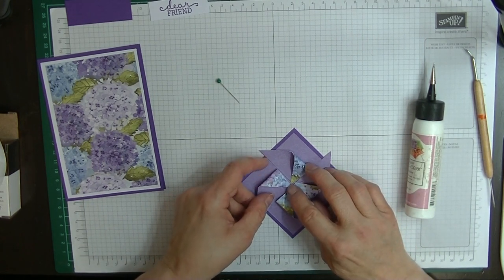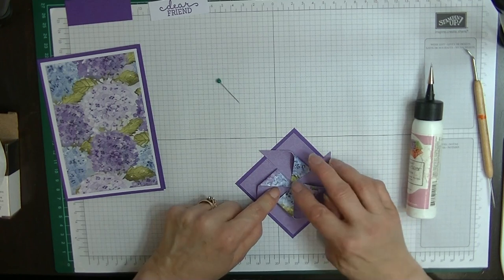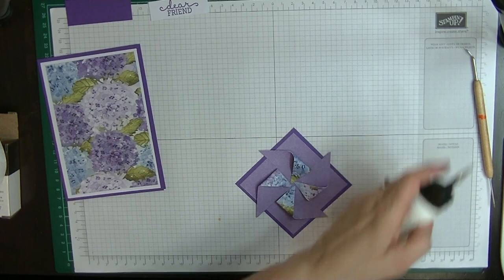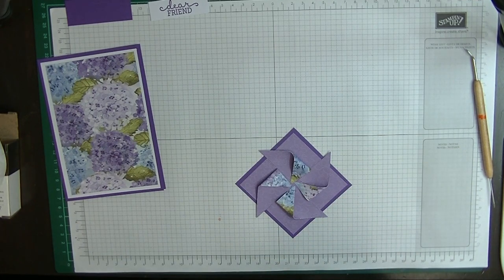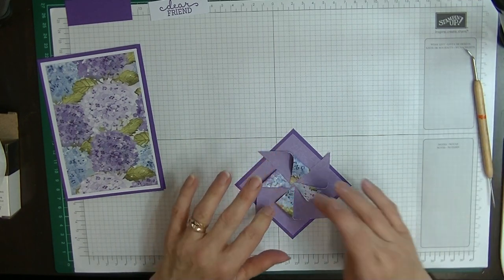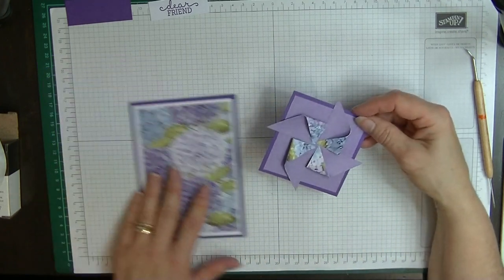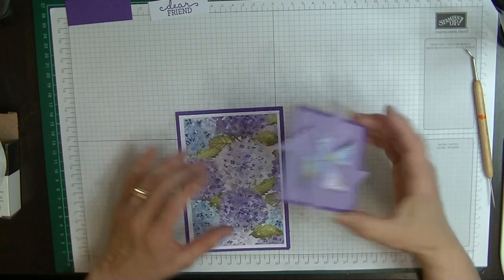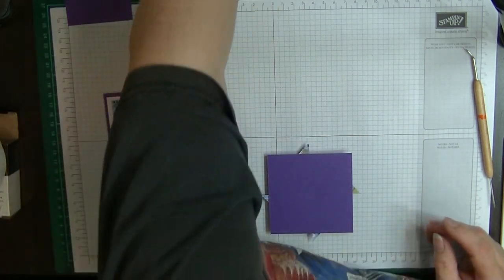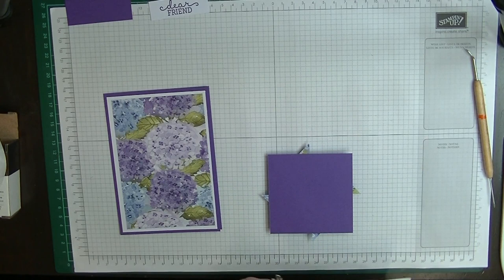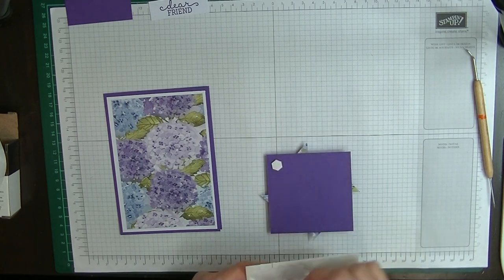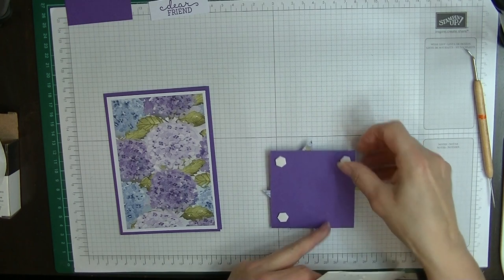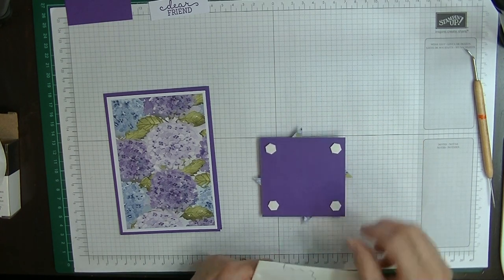Look, how does that look? It's amazing how quick and easy that has come together. Once we've done that, we can now pop this onto the front of our card like so. We're going to do that with some dimensionals. I have some now, I have ordered them and they've arrived, so that's fantastic.